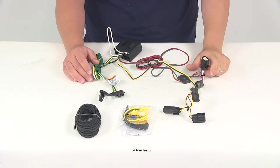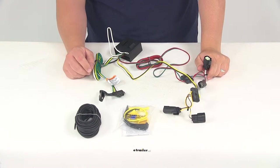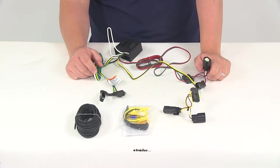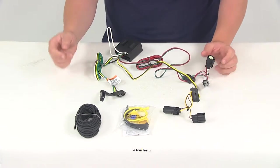Now again the installation is quick and easy. What you're going to need to do is locate the connection points. Those are going to be located behind the driver side and passenger side tail lights at the rear of your vehicle.